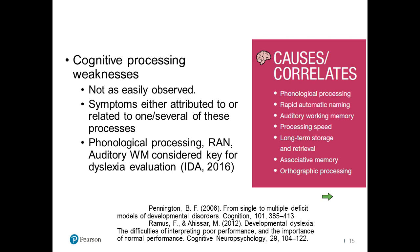The IDA put out guidelines in 2016, and they considered phonological processing, rapid automatic naming, and auditory working memory to be key for dyslexia evaluation. Yes, they are key — but there are also other causes or correlates we have to take into consideration, including processing speed, long-term storage and retrieval, associative memory, and orthographic processing. There are four additional components we suggest be part of a dyslexia evaluation because they absolutely can cause the symptoms we see.